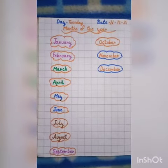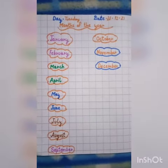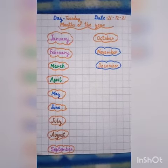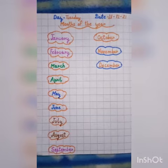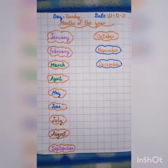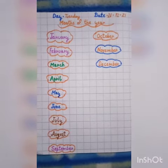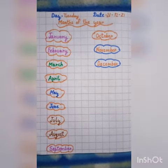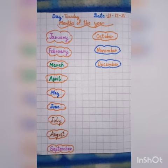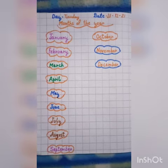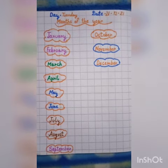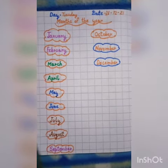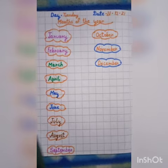There are 12 months in a year. Like my ma'am has made a notebook for months of the year, likewise you have to write down months of the year on your notebook. I will complete my work and send it to my ma'am. Bye-bye. Have a nice day.